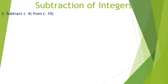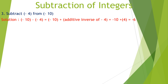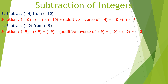Now let's subtract minus 4 from minus 10. We write minus 10 first and subtract minus 4 from this. So minus 10 plus the additive inverse of minus 4 equals minus 10 plus 4, equals minus 6. Next, subtract plus 9 from minus 9. We write minus 9 first, and minus 9 minus plus 9 equals minus 9 plus the additive inverse of plus 9, which equals minus 9 plus minus 9, equals minus 18.